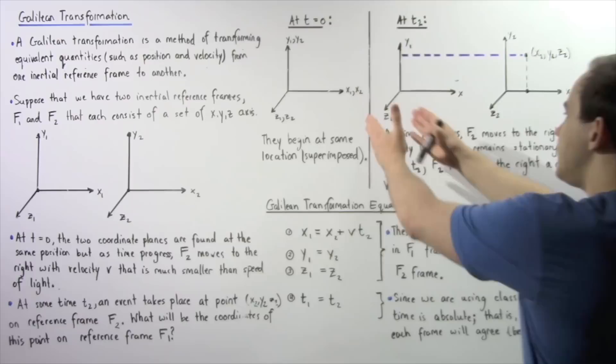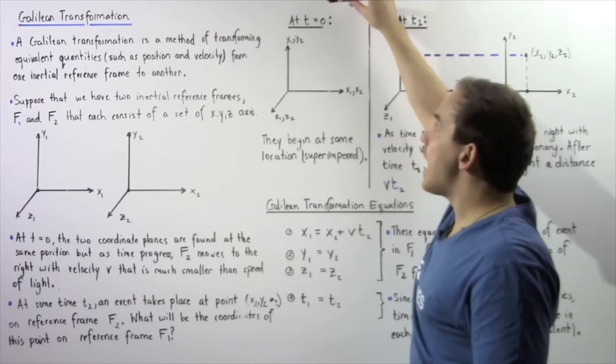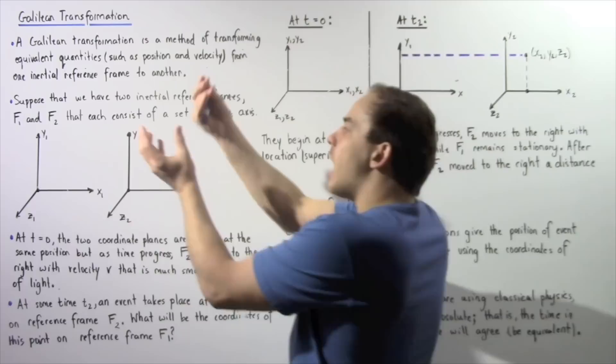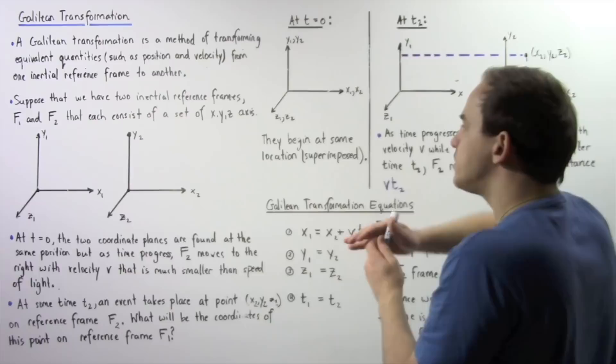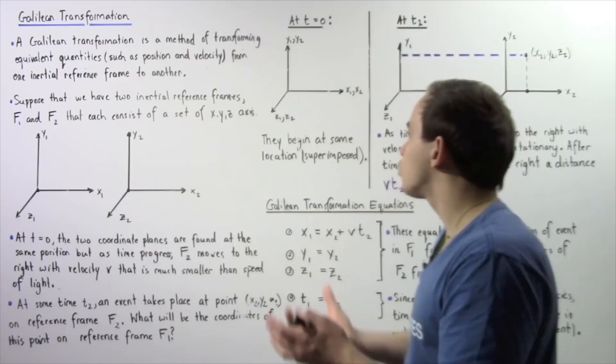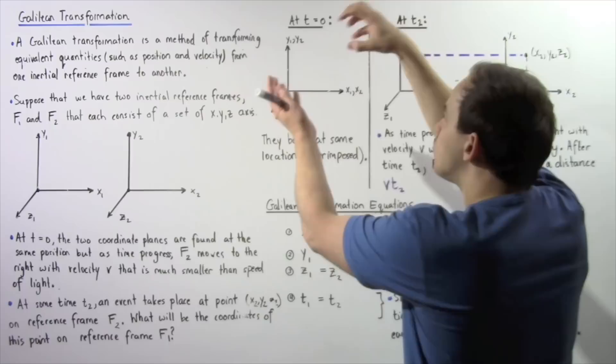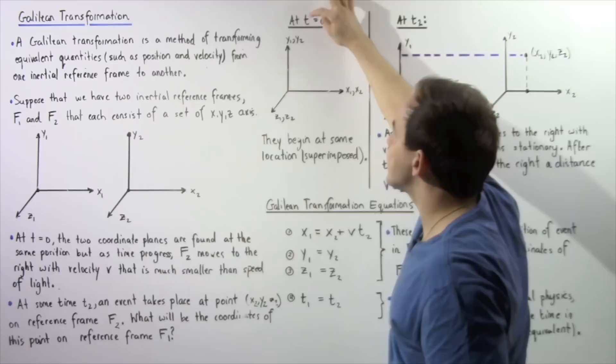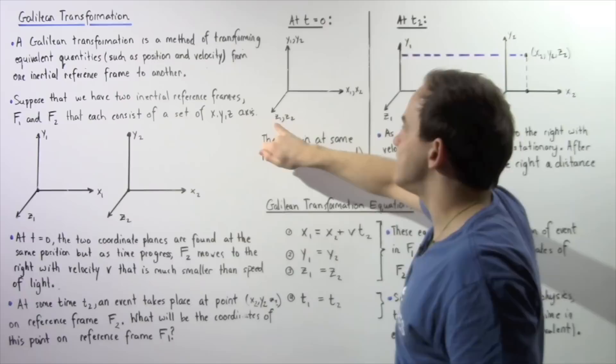Let's look at the following before-and-after diagram. Before, at a time of zero seconds, the two coordinate planes were on top of one another — they coincided and were superimposed because the car was at rest on the road. So we have axes X1 and X2, Y1 and Y2, and Z1 and Z2 all aligned.